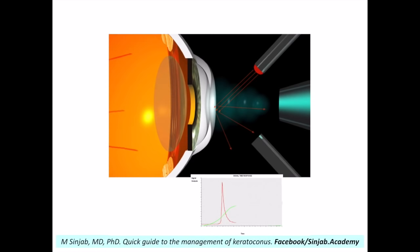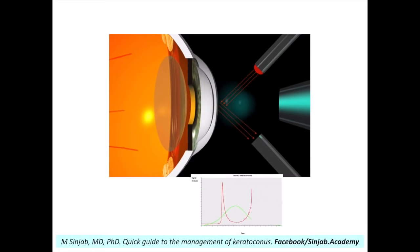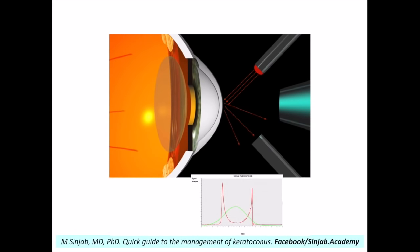The cornea continues to go inward and takes a concave shape, so the reflected rays diverge again and the light intensity measured by the receptor falls. Then the cornea starts to recover its primary shape, returns to the flat position, and the reflected light rays again travel in a parallel path, giving a maximum intensity and drawing the second peak of the ORA waveform. When the cornea finally returns to its convex primary position, the rays are reflected divergently and the intensity falls again.